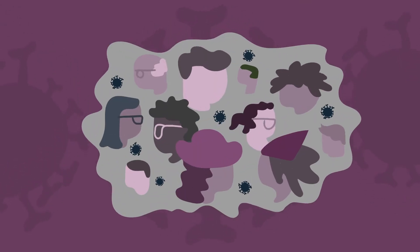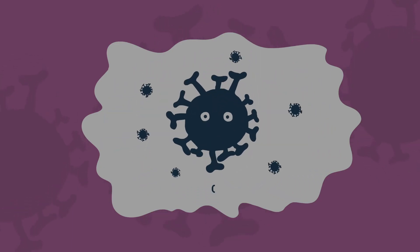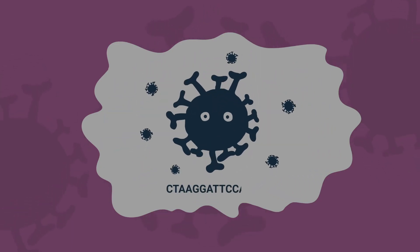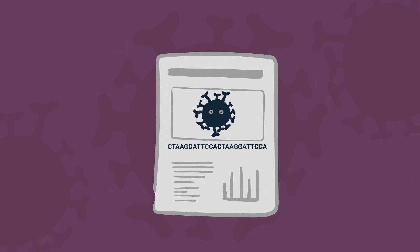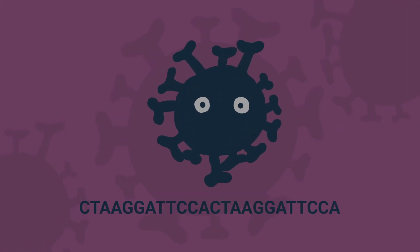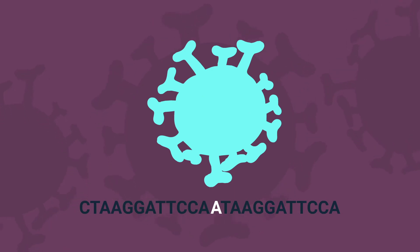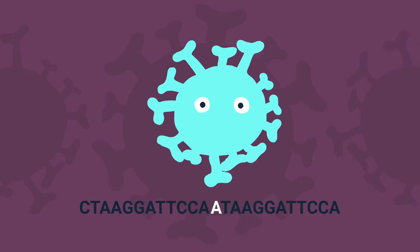Imagine you have a virus that is rapidly spreading. If we sequence its genome, we can create a genetic profile of this specific virus. Now, imagine that a mutation is introduced into that genome. It's still the same virus — it's just slightly different from the original. We'll call it a variant.